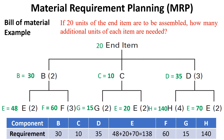Finally, the number of additional units of each item are: thirty B's, ten C's, thirty-five D's, one hundred and thirty-eight E's, sixty F's, fifteen G's, and one hundred and forty H's.